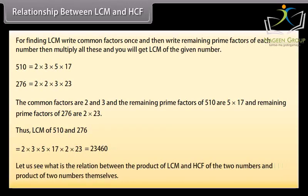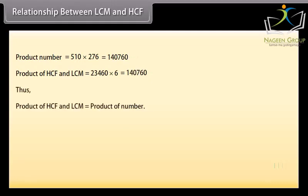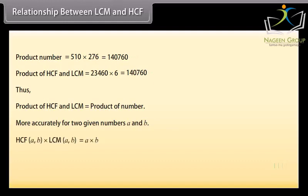Let us see what is the relation between the product of LCM and HCF of the 2 numbers and the product of 2 numbers themselves. From the above discussed example, product of numbers equals 510 into 276, which equals 140,760. Product of HCF and LCM equals 23,460 into 6, which is 140,760. Thus product of HCF and LCM equals product of numbers. More accurately, for 2 given numbers A and B, HCF(A,B) into LCM(A,B) equals A into B.